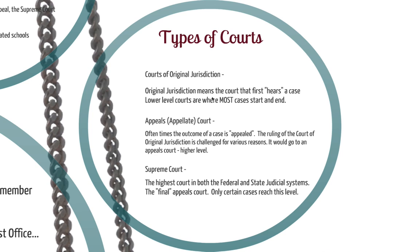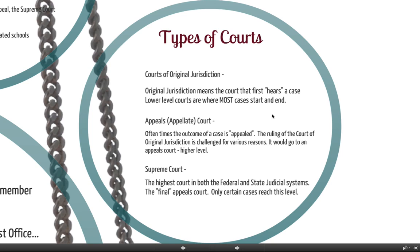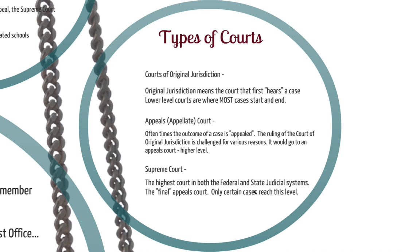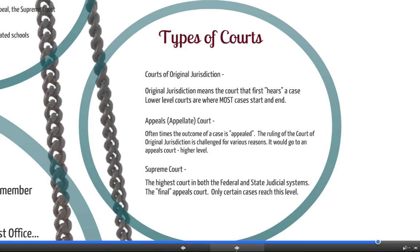In very rare circumstances, the case might go from the original jurisdiction court to the appeals court to an even higher court called the Supreme Court. There's a state Supreme Court and a federal Supreme Court. In both courts, it's the highest one in that particular system, and only certain cases reach this level. This is the final court — if you get to the Supreme Court, you can't challenge their ruling. That's the end of the line.